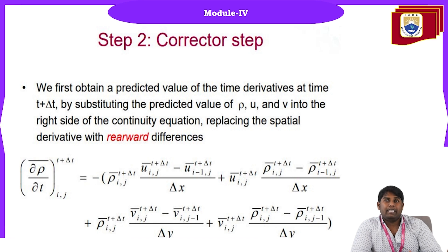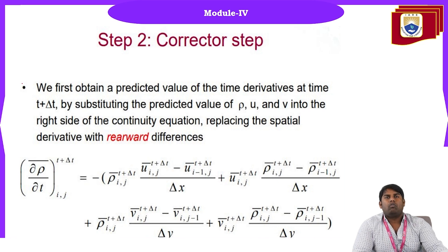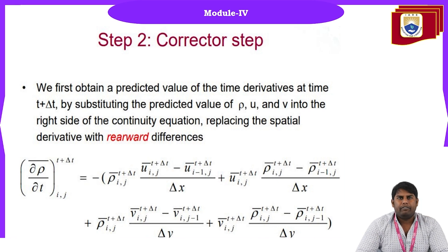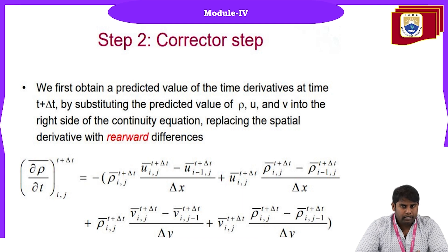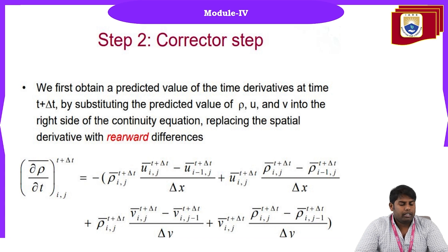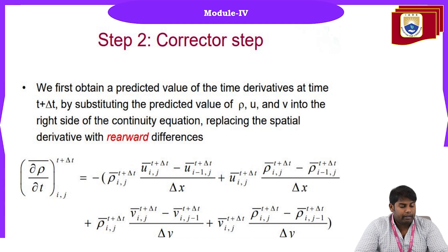The next step is the corrector step, where we apply a correction. For the predictor we used forward difference; for the corrector we use rearward (backward) difference. For example, ∂u/∂x in the corrector is written as [u(i,j) − u(i−1,j)] / Δx.